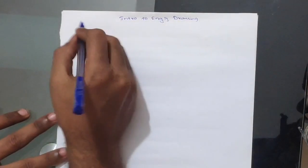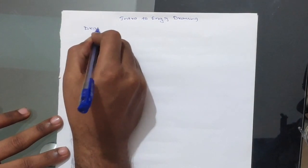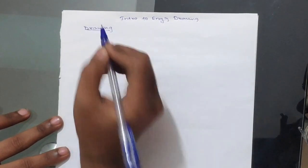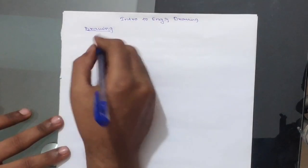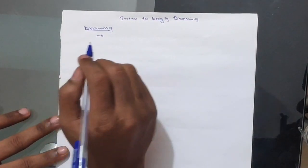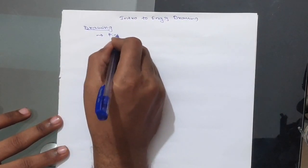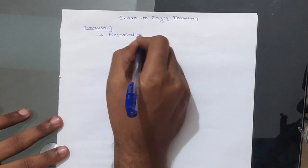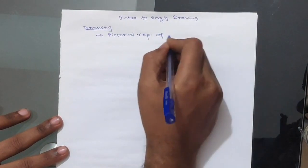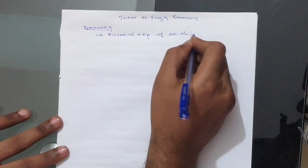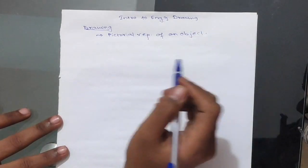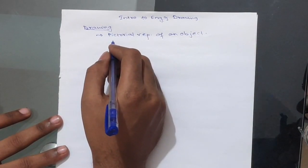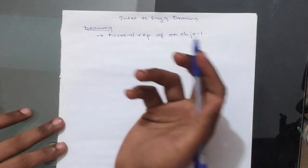Before we start with what is Engineering Drawing, first let us focus on what is Drawing. Drawing is nothing but pictorial representation of an object. This object can be anything, it can be a scenery, it can be a flower, it can be anything.